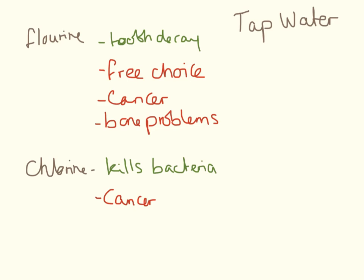There are two things that are added to water. Chlorine is added to kill the bacteria, and you need to know some advantages and disadvantages of both. The disadvantage of chlorine is that large amounts of chlorine can cause cancer — and I would say large amounts, much, much higher than you would get from normal use of tap water.